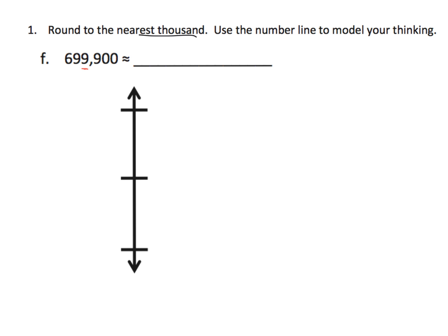So if we were going to round down to the next thousands down, not necessarily the nearest, but the next one down, what would it be? It would be 699,000. And if we were to round up to the next thousand, what would it be? This was a little on the tricky side. It would be 700,000.